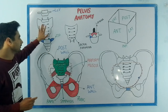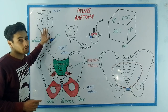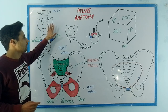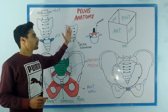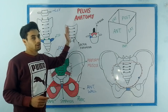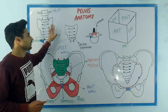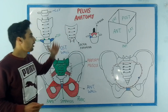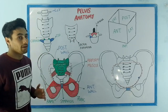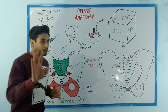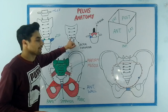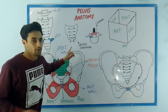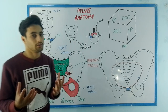This is the anterior wall, and if we rotate this sacral bone, we have the posterior wall. On the posterior wall we have an important structure known as the sacral hiatus.